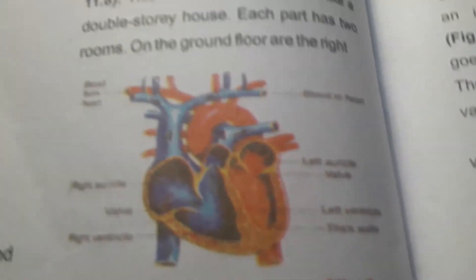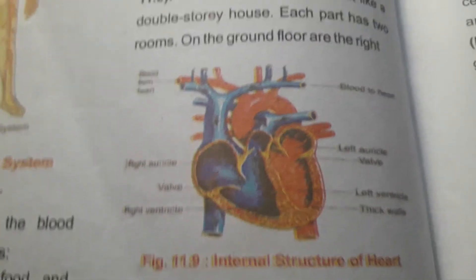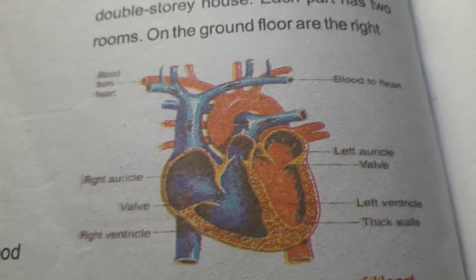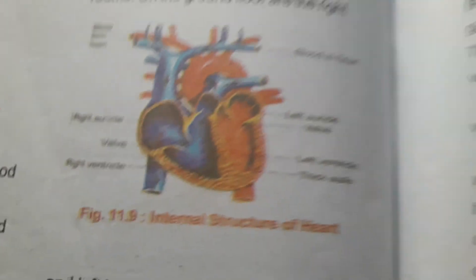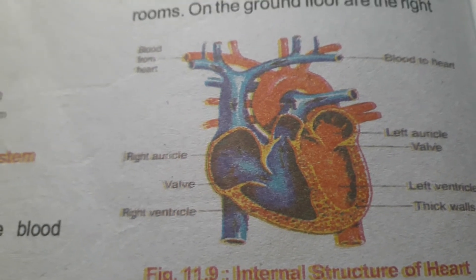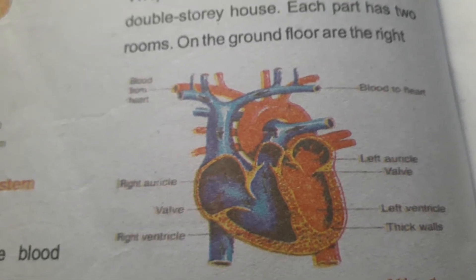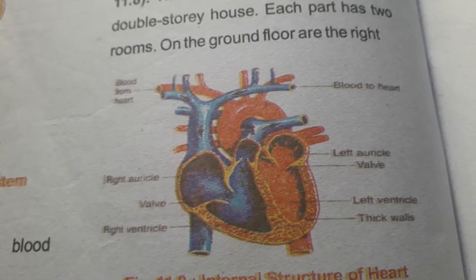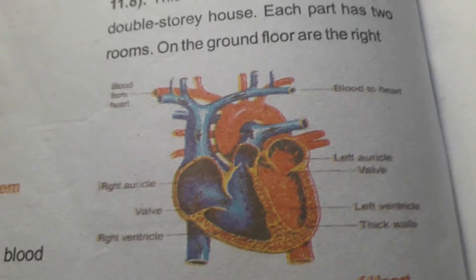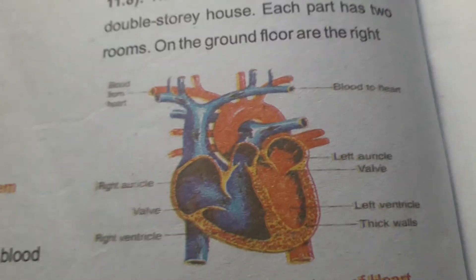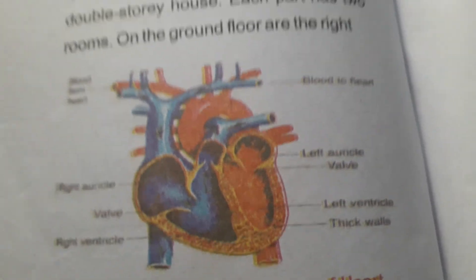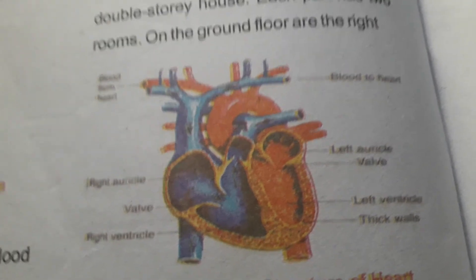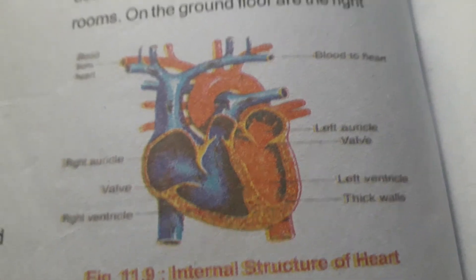The heart's main function is to pump blood through blood vessels. The right side of the heart carries deoxygenated blood, while the left ventricle carries oxygenated blood. The left side receives oxygenated blood — blood rich in oxygen — from the lungs and sends it through the body. The right side receives blood back with less oxygen and more carbon dioxide and sends it to the lungs.